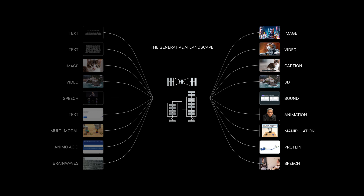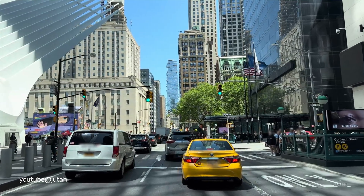Multimodal neural networks can integrate diverse types of data — such as text, images, video, and audio — into one model to enhance performance and capture valuable information across different modalities. Let's see how LADA works.